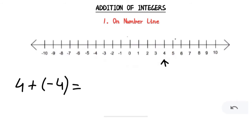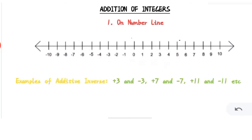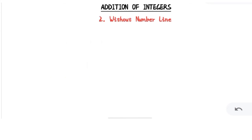Counting 1, 2, 3, and 4, our answer is 0. From this we learn a new concept: additive inverse. Numbers such as +4 and -4, or +3 and -3, when added to each other give the sum 0. These numbers are known as additive inverses. Some examples of additive inverse pairs are: +3 and -3, +7 and -7, +11 and -11.